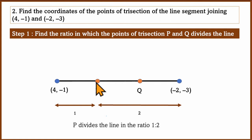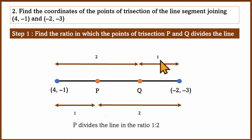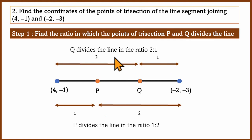For point Q, the left portion is 2 units and the right portion is 1 unit. So Q divides the line in the ratio 2:1.